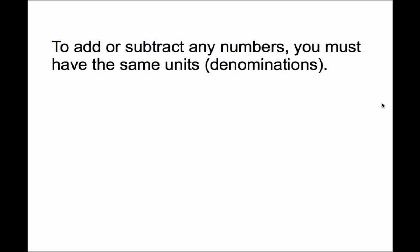We know that denominators are the bottom numbers of fractions, and denominators name the unit — they tell you what the name of each unit is. If the denominator is 5, you're dealing with fifths. If the denominator is 7, you're dealing with sevenths. One thing we have to really focus on when adding and subtracting any numbers — and fractions are numbers — is that to add or subtract any numbers, you must have the same units or denominations.